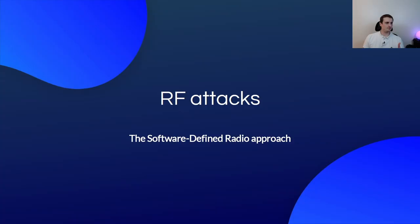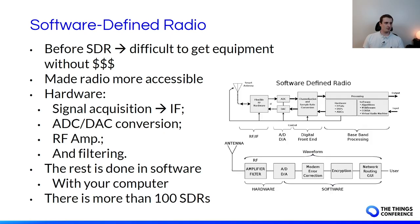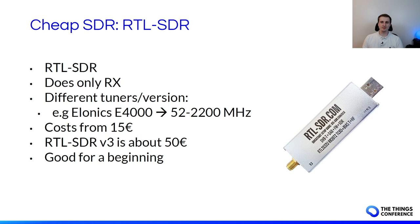Let's talk about RF attacks using SDR. Before SDR it was very difficult and expensive to get the right equipment. Now even with a very cheap SDR dongle you are able to do signal acquisition, then process, demodulate, and decode the signal. If you also want to transmit, you need to spend more on an SDR capable of transmission. You can choose an SDR that fits your expectations depending on what you want to do.